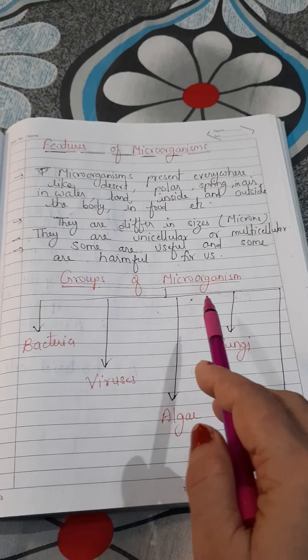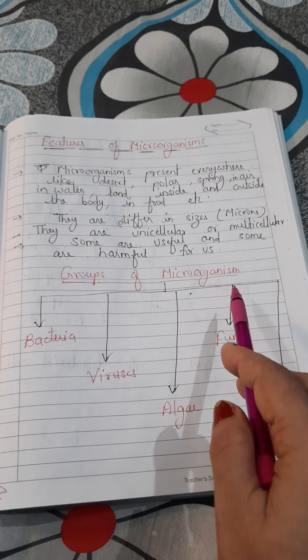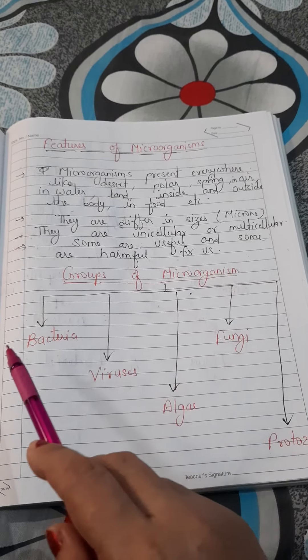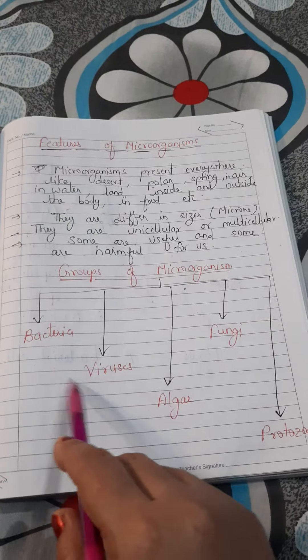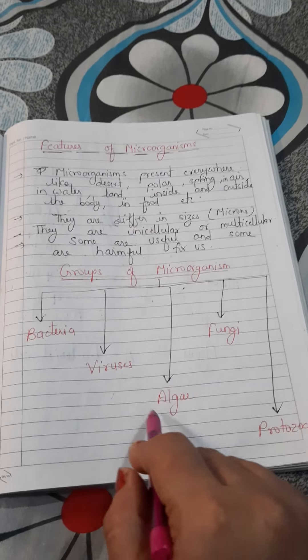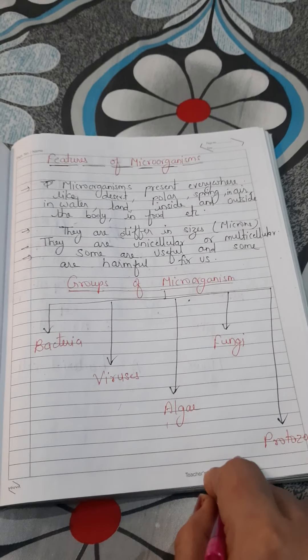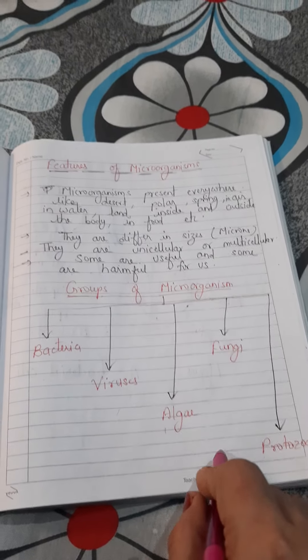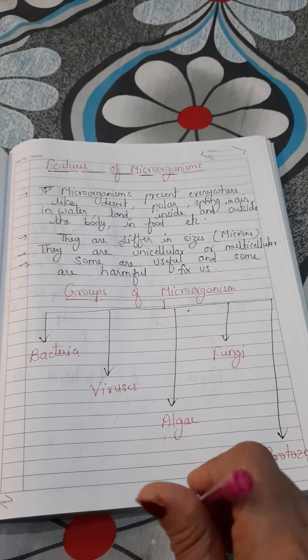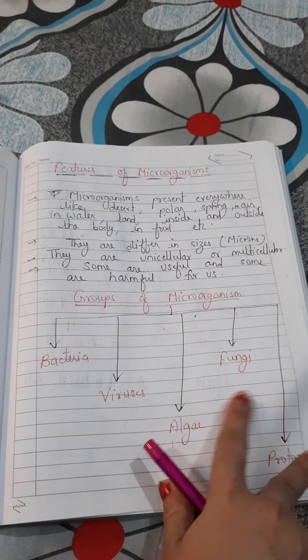Next is the groups of microorganisms. There are five groups: bacteria, viruses, algae, fungi, and protozoa. We will read about each one by one.